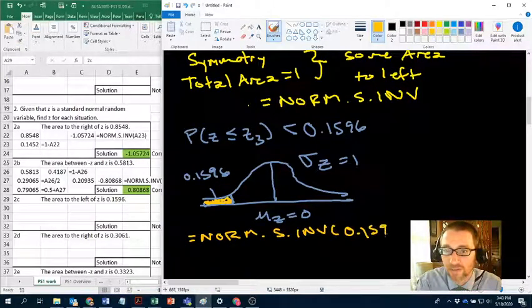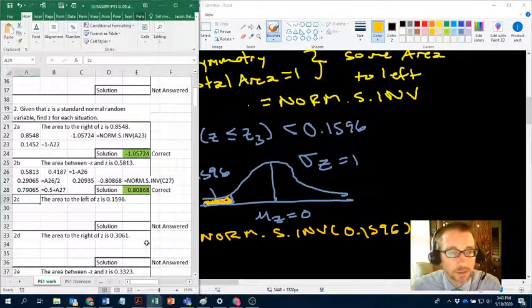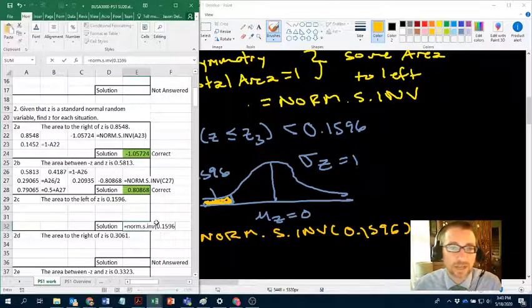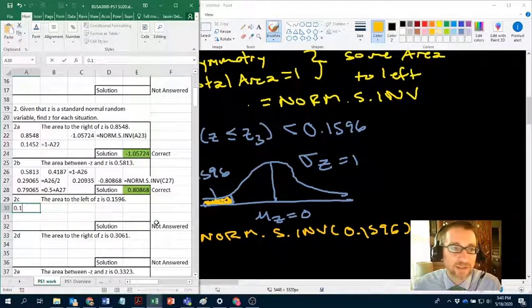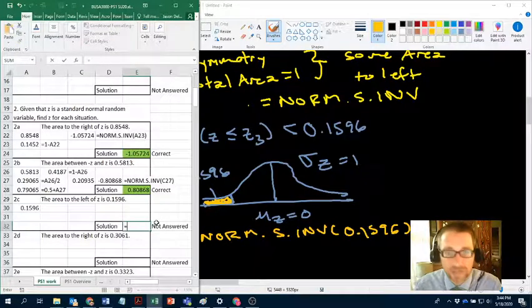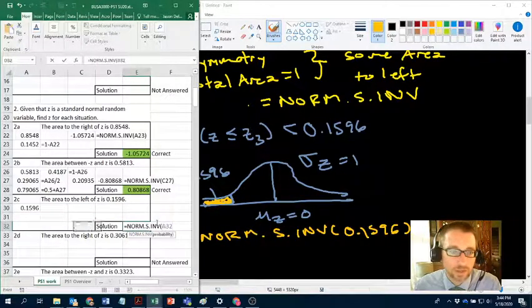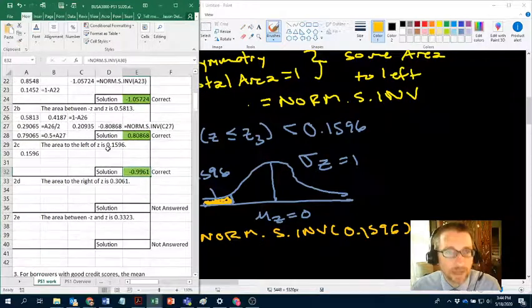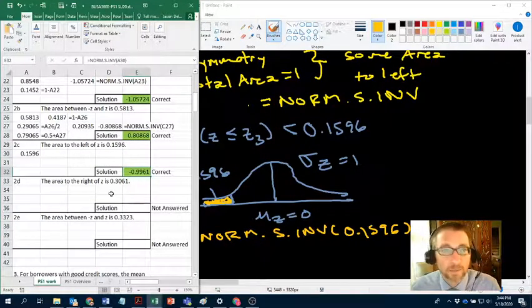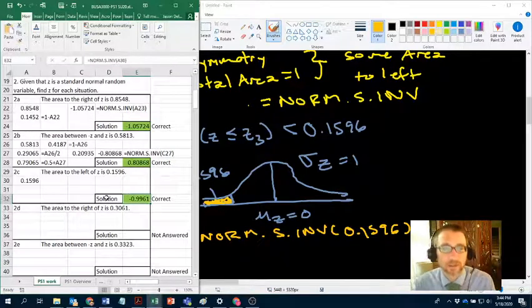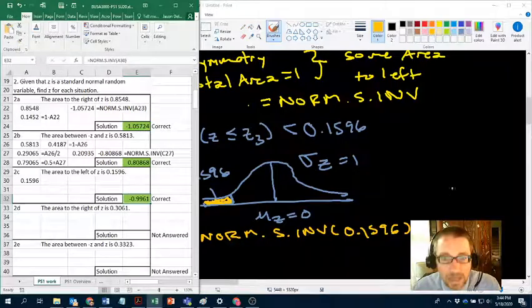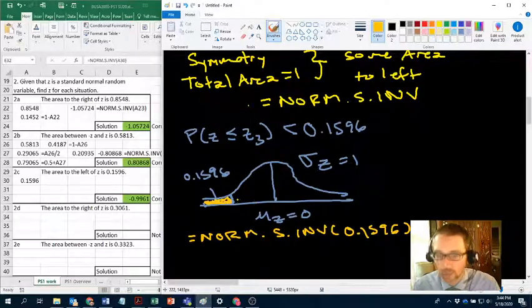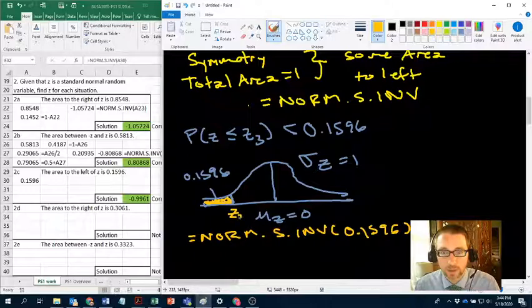We already are given the area to the left, which is exactly what norm.s.inv is designed for. So if we just plug 0.1596, it should spit that right out. Equals norm.s.inv 0.1596. Actually, that makes me feel very uncomfortable. Let me put 1596 in here. I never like to hard code my formulas, because if I type it wrong, it's not obvious what I screwed up. And there you can see that's the answer. The area to the left of z is 0.1596. That's how we find the solution to these three types of problems, whether we have an area to the right, area between, or area to the left.